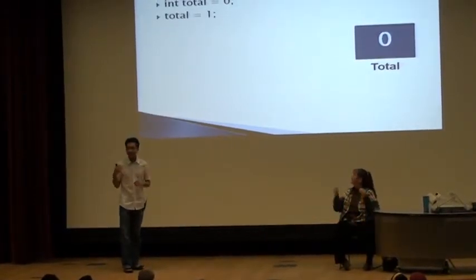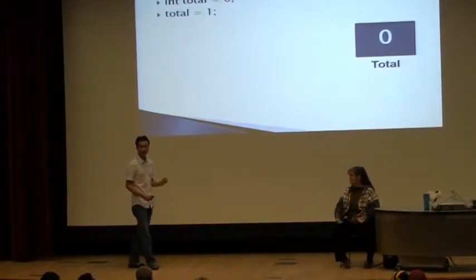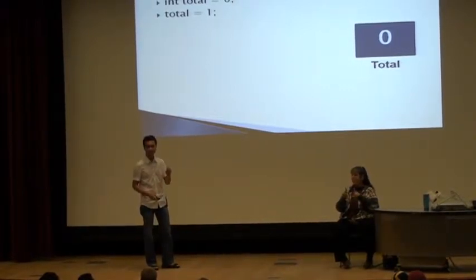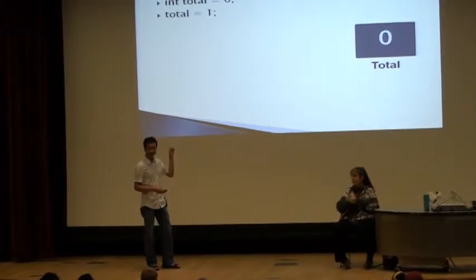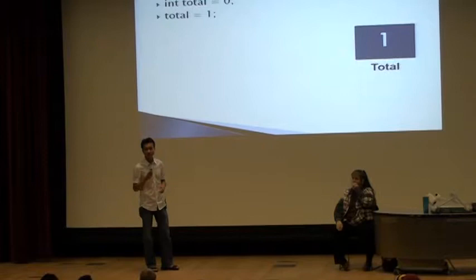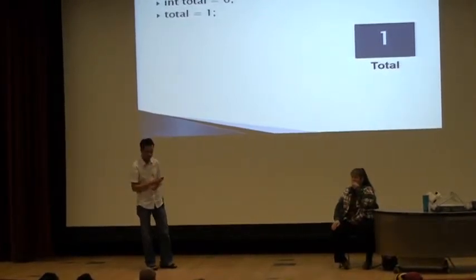Now let's say if I want to say total equals to one. What happens? I've already declared it in a variable called total, so the space remains the same. The only thing I will do is the value will change. So it will go from zero to one. So that's the effect of total equals to one. Total becomes one.